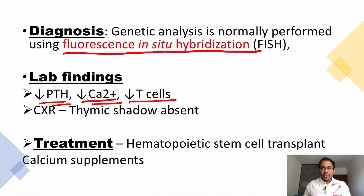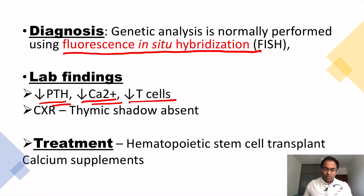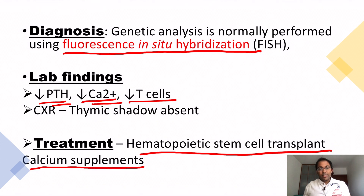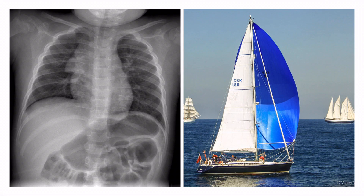Treatment is very challenging because there is no cure for DiGeorge syndrome, so we treat it symptomatically. One option is hematopoietic stem cell transplant, though it's not easy to perform. Another option is to supplement calcium because of the decreased parathyroid hormone.